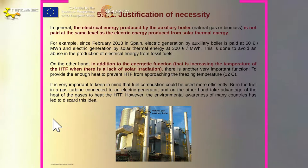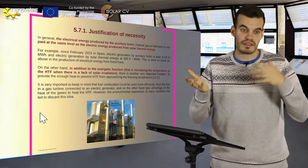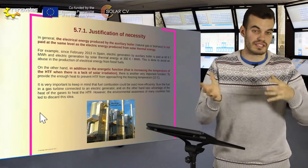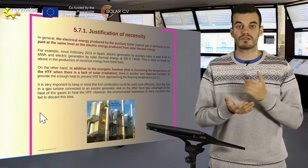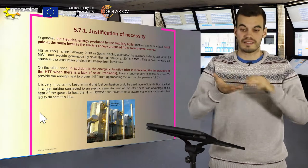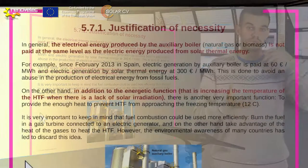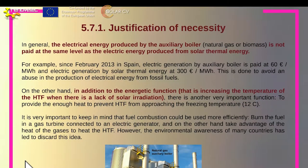For example, imagine that you produce 1000 thermal megawatts with this auxiliary boiler. You are not going to sell these megawatts in the same market as the megawatts produced by the solar field. In fact, you are going to sell these in the general market.